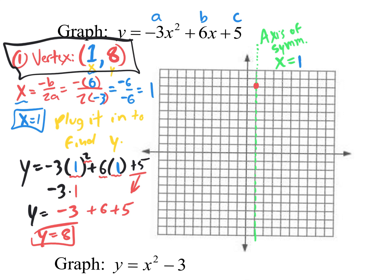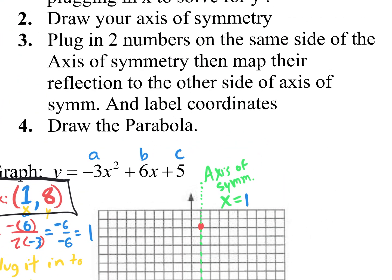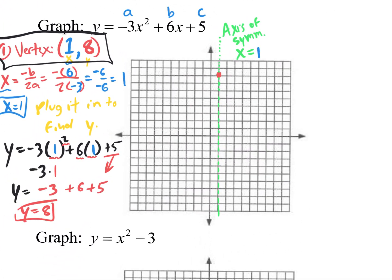We know the vertex is the most important point, and we have the axis of symmetry. Now we need more points. The instructions say plug in two numbers on the same side of the axis of symmetry and reflect them over to the other side. What's the easiest number to plug in? 0. Especially for a standard form quadratic trinomial: plug in 0 and everything becomes 0 except the c value. So 0 gives us the output 5 — coordinate (0, 5). Let's graph it.